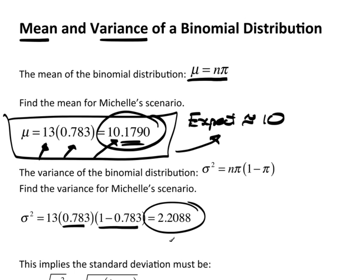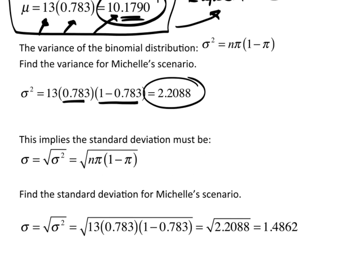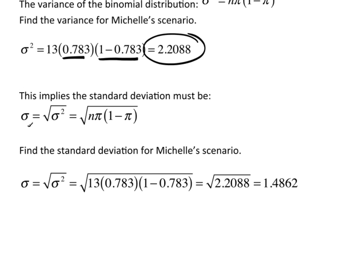The variance is typically not all that useful other than it gives me what I would use more often, and that's the standard deviation. The standard deviation, as we recall from earlier chapters, is simply the square root of the variance. So the standard deviation for a binomial would be the square root of n times pi times 1 minus pi. For Michelle's scenario, sigma equals the square root of 2.2088, which gives 1.4862.